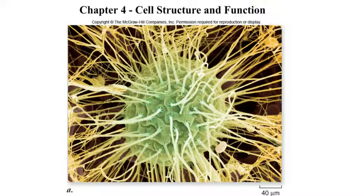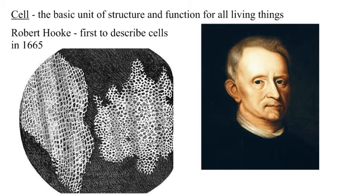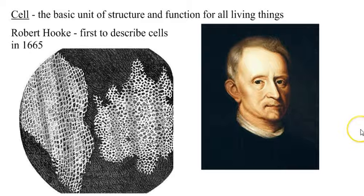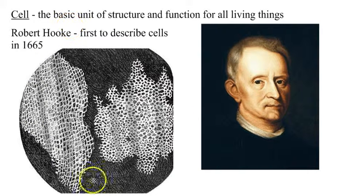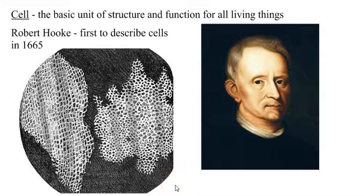Let's start with a little bit of history first. The first person that actually recorded seeing cells was Robert Hooke. He's the first to describe cells in 1665. He actually looked at shavings from a cork, and you can see here's actually a copy of Hooke's drawing showing the cork.